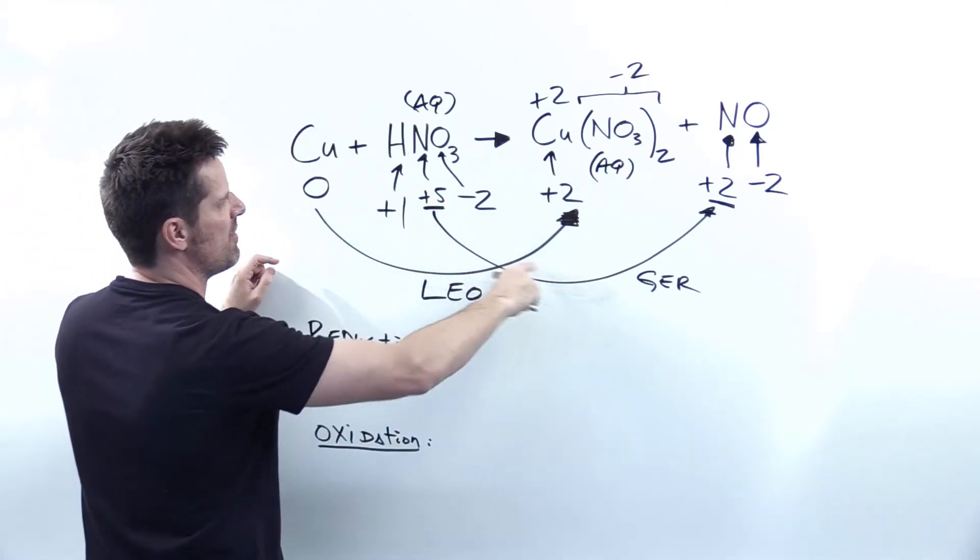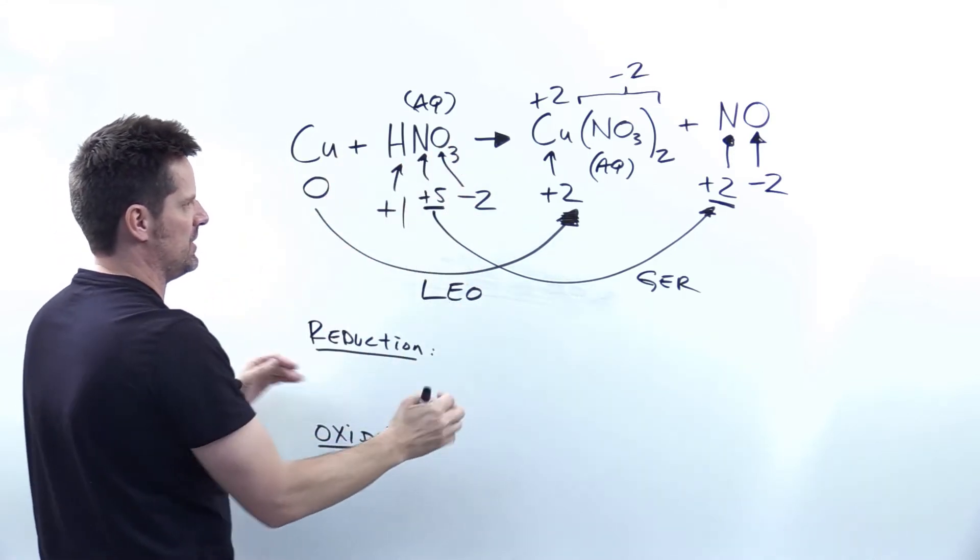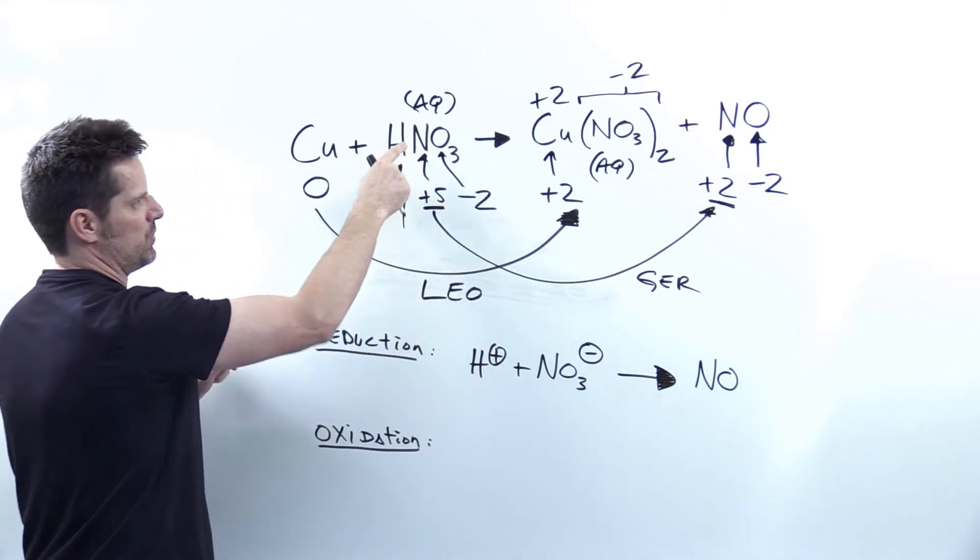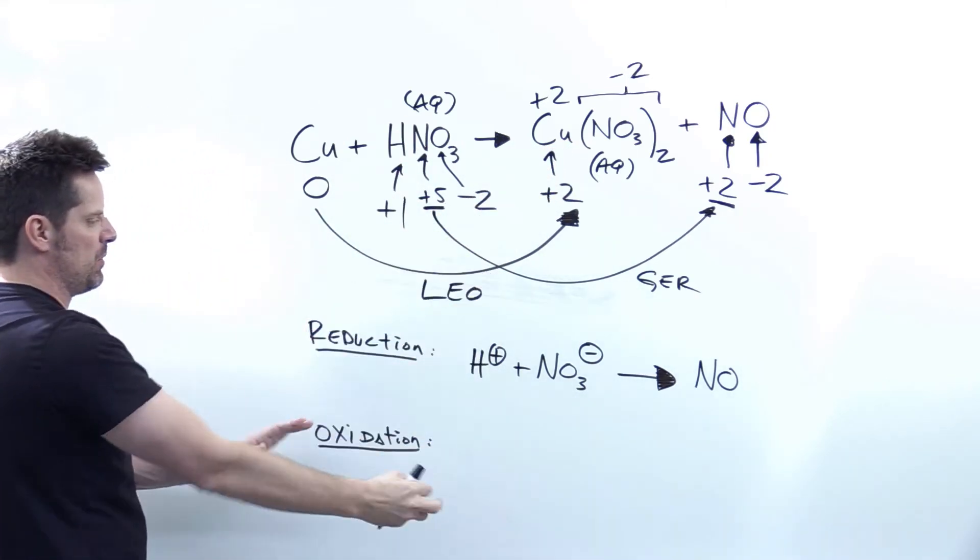Thus, for the reduction, that is this Gurr half right here, I'm going to pull out nitric acid, separating cation from anion because it was aqueous right there. And I'll do the same thing with the copper reaction.